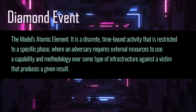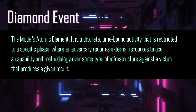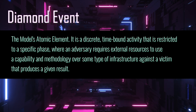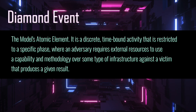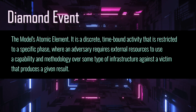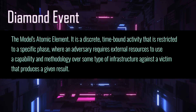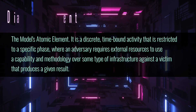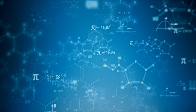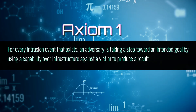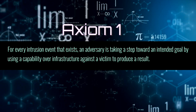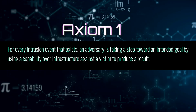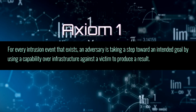Let's define the Diamond Event. The Diamond Event is described as the model's atomic element. This event is a discrete time-bound activity that is restricted to a specific phase where an adversary requires external resources to use the capability and methodology over some type of infrastructure against a victim that produces a given result. It's not expected for all of these features to be known, and most of them will be unknown and will be completed by the initial discovery after data is gathered. This is where Axiom 1 is applied, which states that for every intrusion event that exists, an adversary is taking a step towards an intended goal by using a capability over infrastructure against a victim to produce a result.